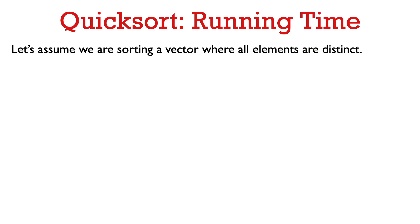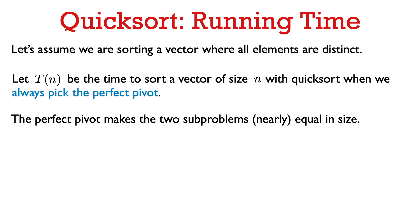Now let's talk about the running time of QuickSort. Without going through all the details of the analysis — which are a bit complicated — I'll give the high-level intuition. We'll simplify by assuming all elements in the vector are distinct, and initially make an additional assumption which we'll see how to weaken in the next few slides.